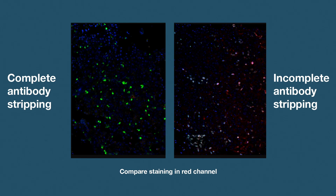Strip testing is used to confirm efficient removal of the primary and secondary antibody. This is important because incomplete stripping can result in fluorophores detecting targets from the current round plus targets from previous rounds, leaving you with misleading results at the end of your experiment.